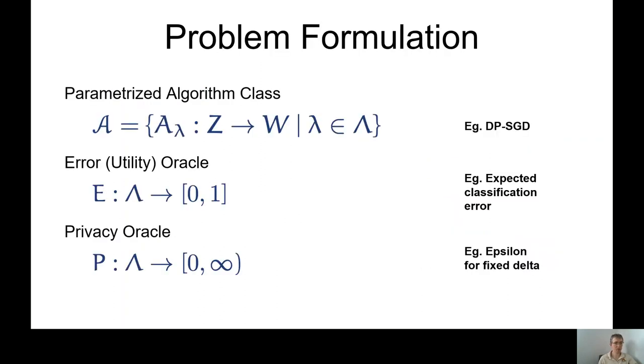So let's try to formulate the problem a little bit more formally. Let's consider a parameterized class of algorithms. A lambda here is an algorithm configuration that we could try, and lambda is a configuration from hyperparameter space. We assume that when we choose a setting from the hyperparameters, we can evaluate the error and it's going to be a number between 0 and 1.